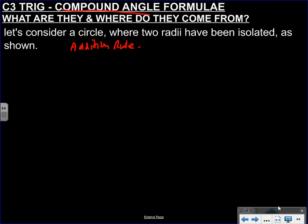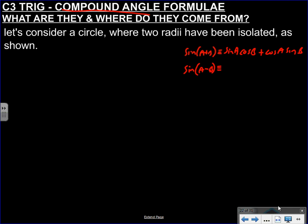The addition rule formula, or the compound angle formula - what are they? Well, there are six of them. The first one is sin(A+B). If you had two angles, say A was 30 and B was 15, then the following would apply: sin(A+B) is the same as sinA cosB plus cosA sinB. And sin(A-B) is sinA cosB minus cosA sinB. Notice that sine goes sine-cos cos-sine, and the sign in the middle stays the same.